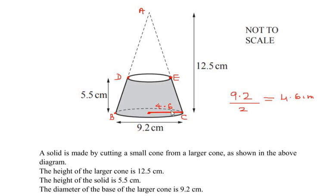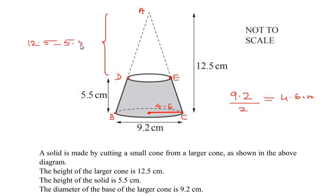We know the height of the bigger cone and the height of the given solid, but we do not know the height of the smaller cone. We can find it by subtracting the height of the solid from the total height: 12.5 minus 5.5 gives us 7 centimeters. That is the height of the smaller cone.